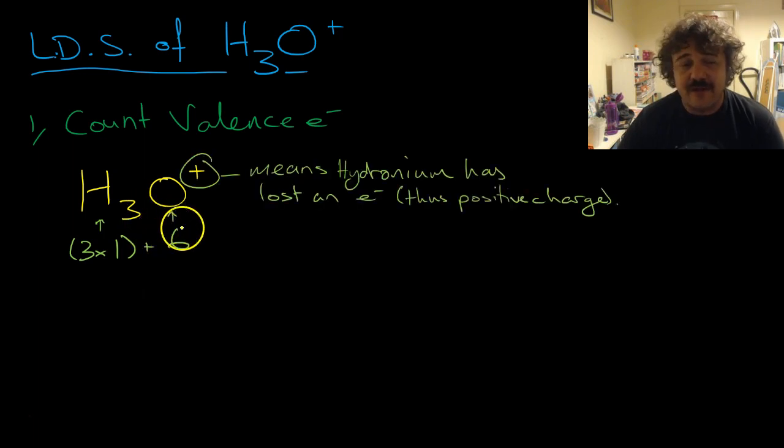That's an issue. However, this plus means we take away 1 electron, because it has 1 more proton than it does electrons. So we take away an electron. That's a minus 1. And this gives us an even 8 electrons, and that makes it nice and simple.